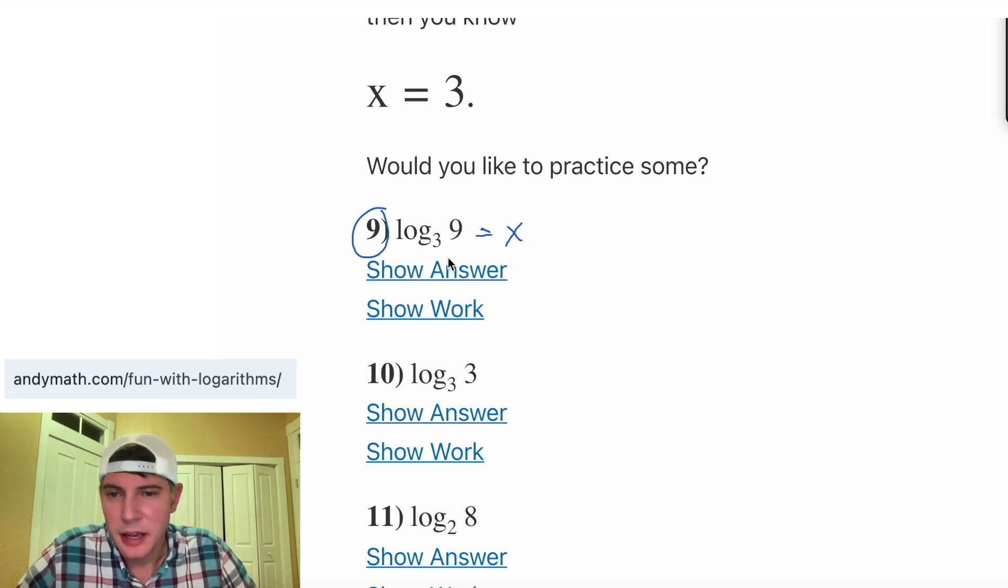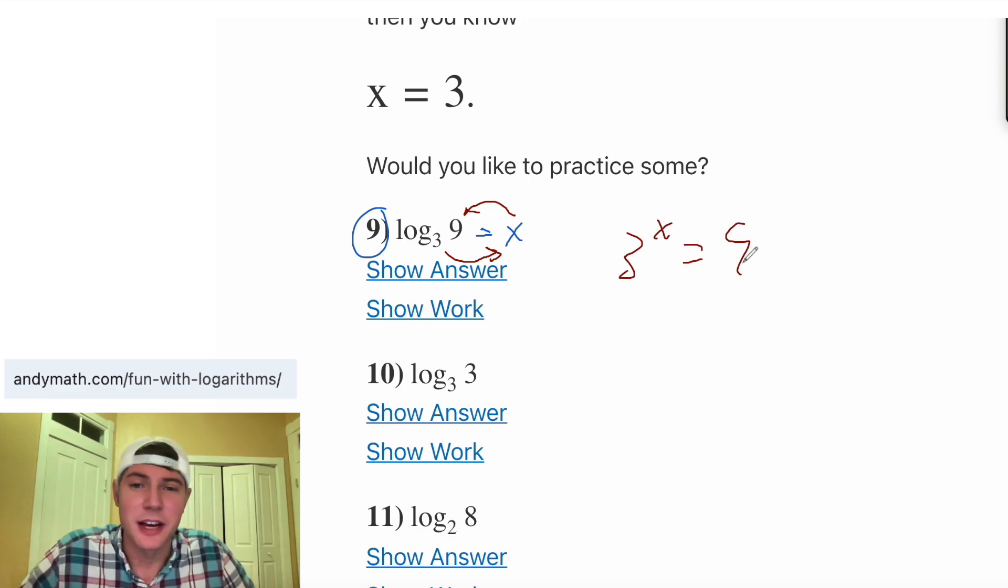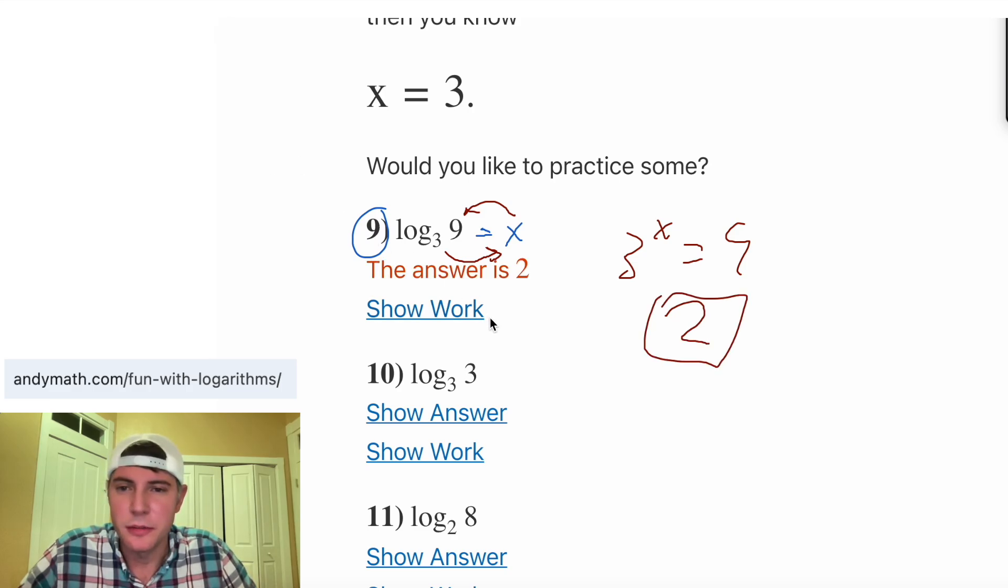If we set this equal to x and do our loop, it's 3 to the x equals 9. So 3 to what power gives us 9? Well, that's going to be 2. So if we hit show answer, it should be 2. So there it is.